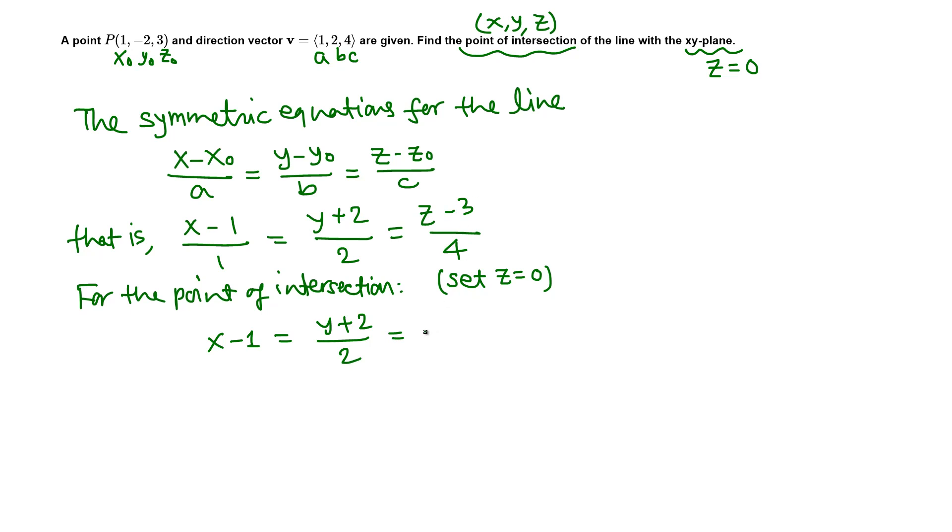Now this is a number, so this implies x minus 1 equals negative 3 fourths and y plus 2 over 2 equals negative 3 fourths.